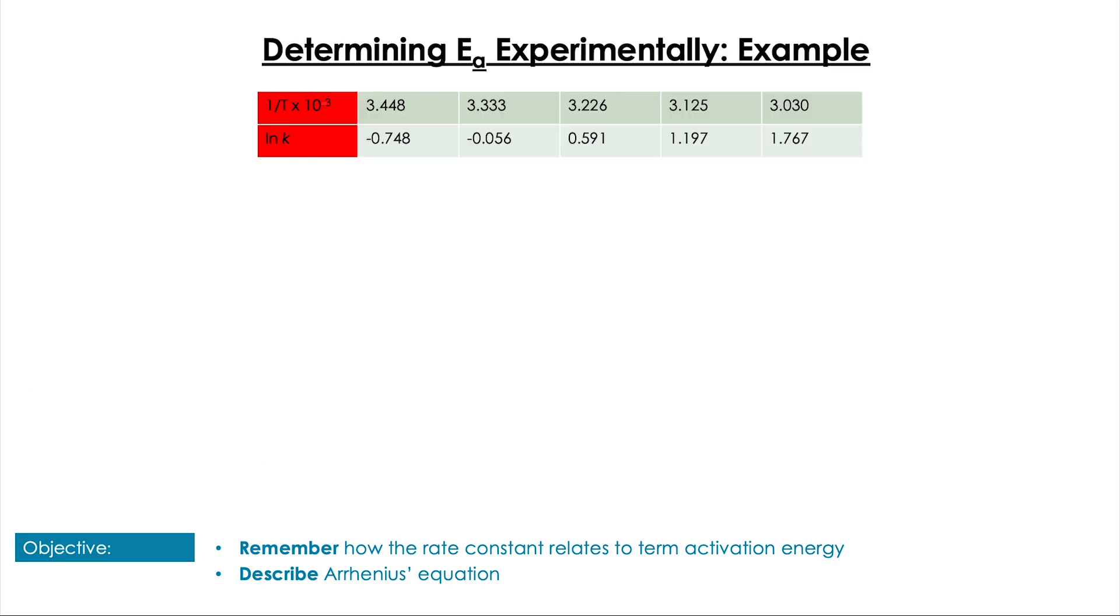So let's have a go at processing a set of data. The first thing we're going to want to do - and we're going to want to do kind of four steps in every situation - is we're going to want to adjust the values to ln k and to 1 over T. The second thing we're going to want to do is we're going to want to actually plot the graph. The third thing we're going to want to do is we're going to want to find the gradient of that graph. The fourth thing we're going to want to do is from that gradient calculate the activation energy.